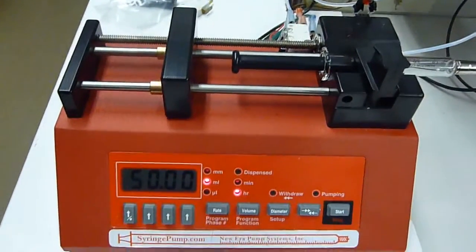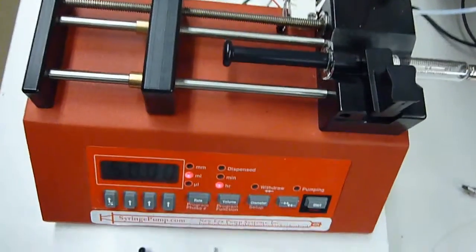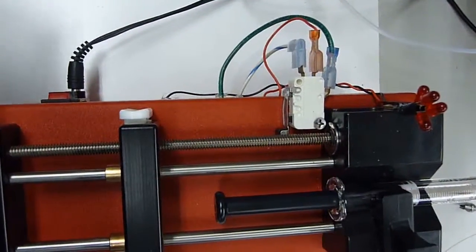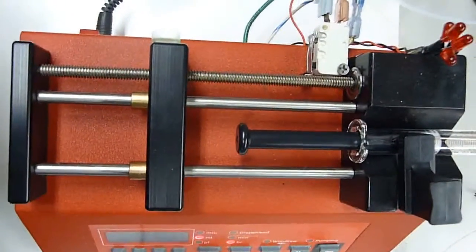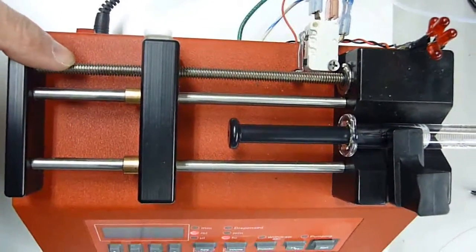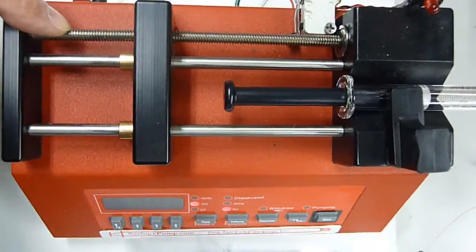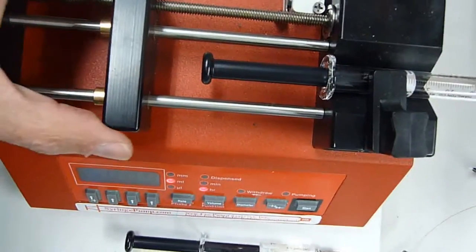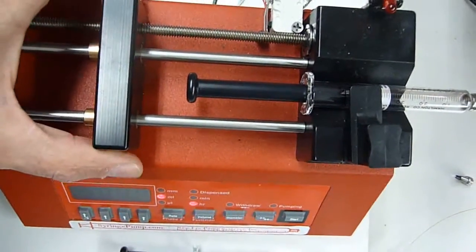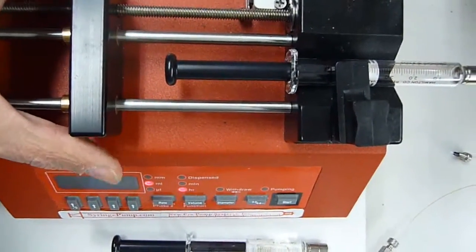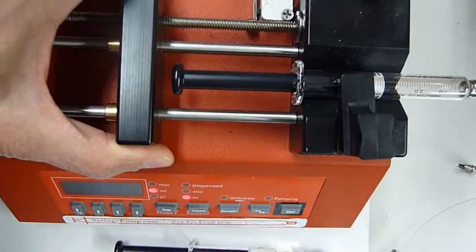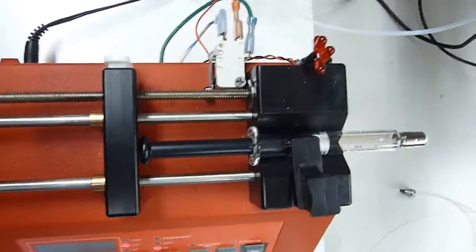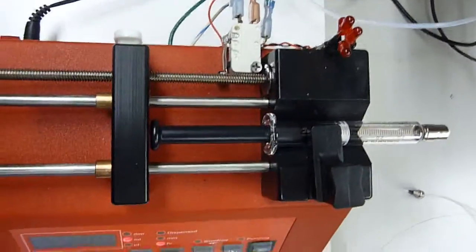One of the changes I made to this unit is I added a micro switch, and this unit has some good power. If you put a plastic syringe in here and you let it go all the way, it can crush that plastic syringe. So I wanted something to stop the mechanism when it got close to the end and let me know.